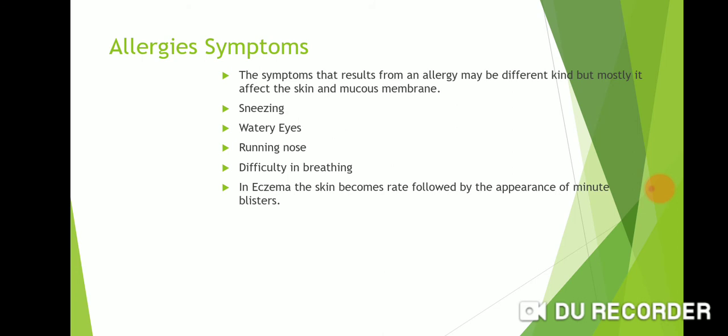What are the symptoms of allergy? The symptoms that result from an allergy may be of different kinds, but mostly they affect the skin and mucous membrane. Eyes water and release tears, there is a running nose, difficulty in breathing, and in eczema the skin becomes red followed by the appearance of minute blisters.